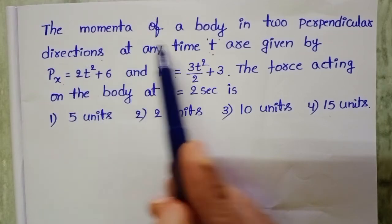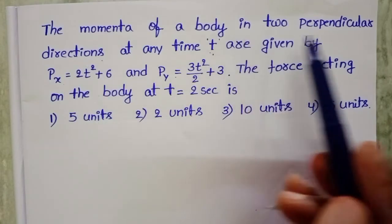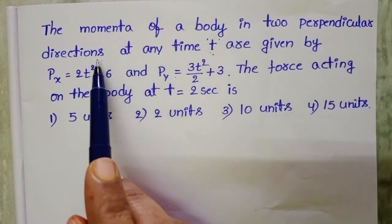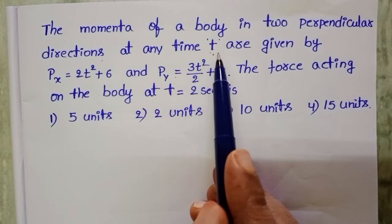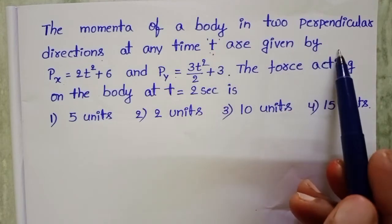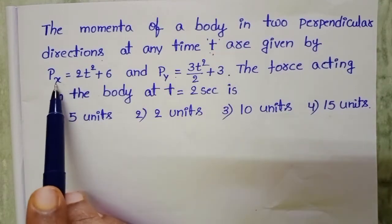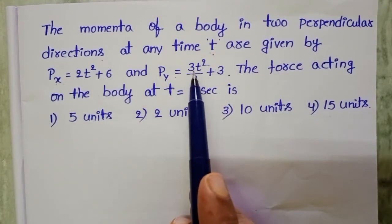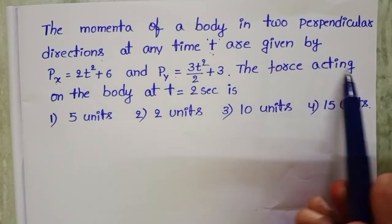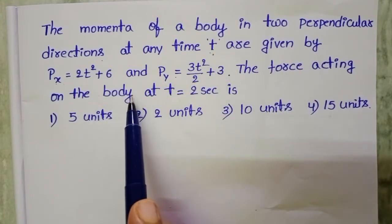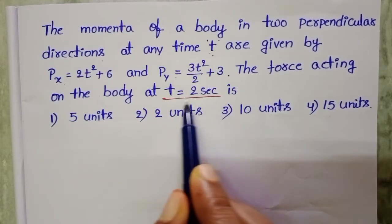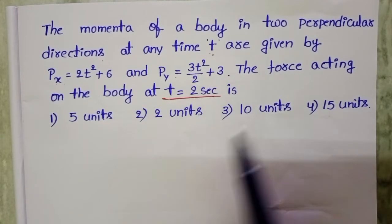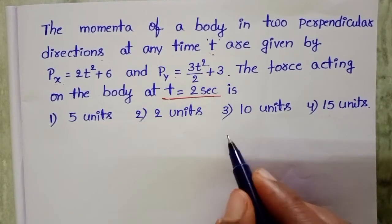The momentum of a body in two perpendicular directions at any time T are given by Px and Py. The force acting on the body at T equals 2 seconds is to be determined.